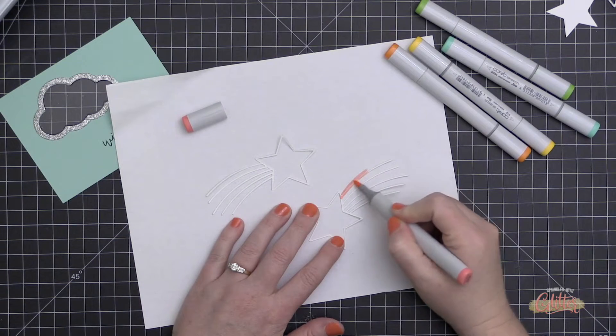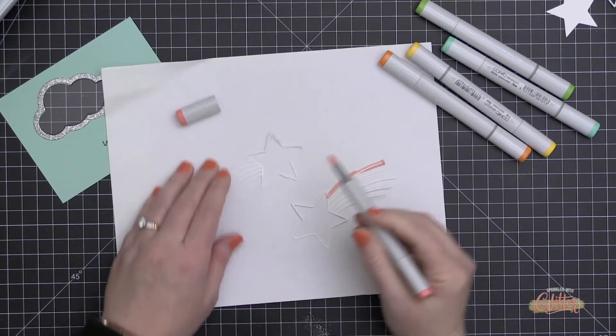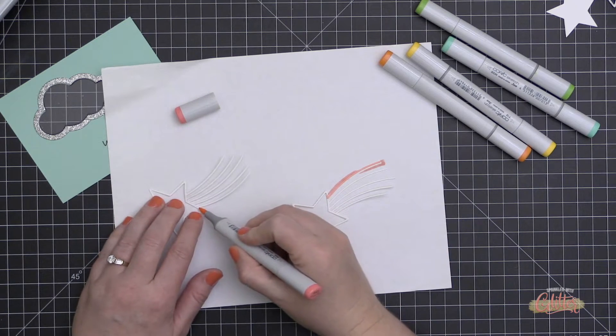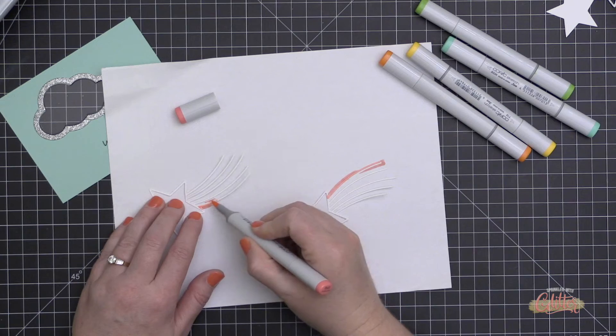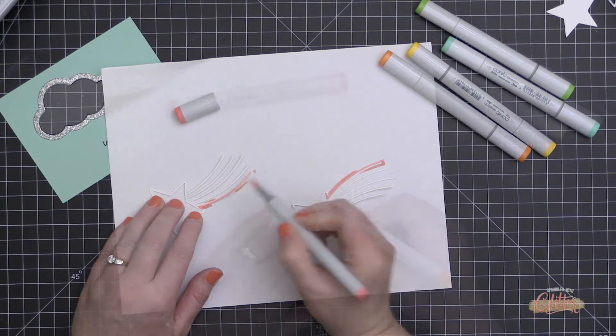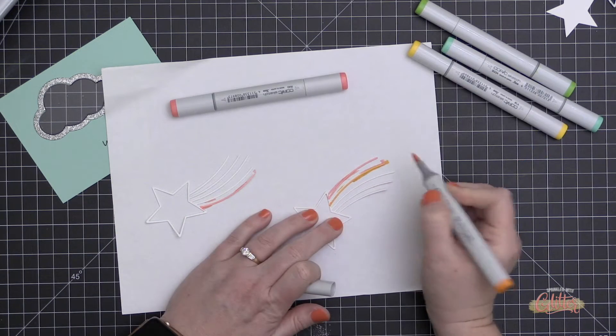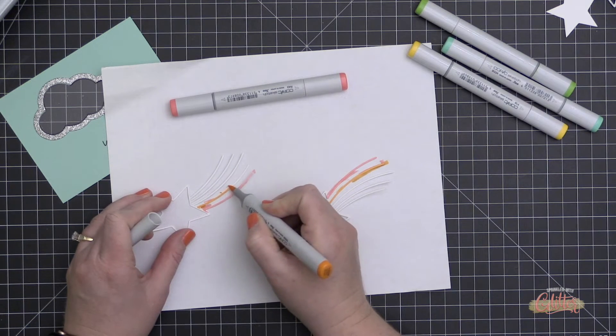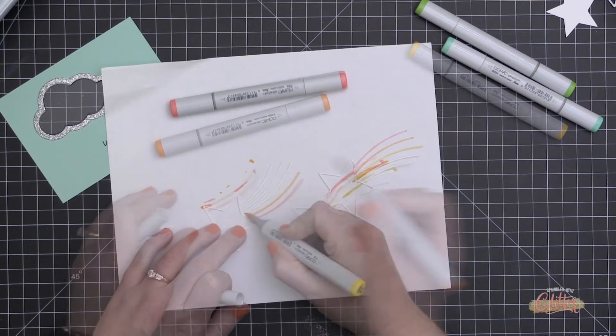Now you might have seen me playing with these shooting star die cuts. I originally intended to cut this out of silver glitter cardstock and just do that, but I thought it would be really cool to kind of make this a rainbow. You saw how I stacked them on top of each other to create those little tails that come out both sides of that star. I thought that was a really cool effect and a fun way to use it.